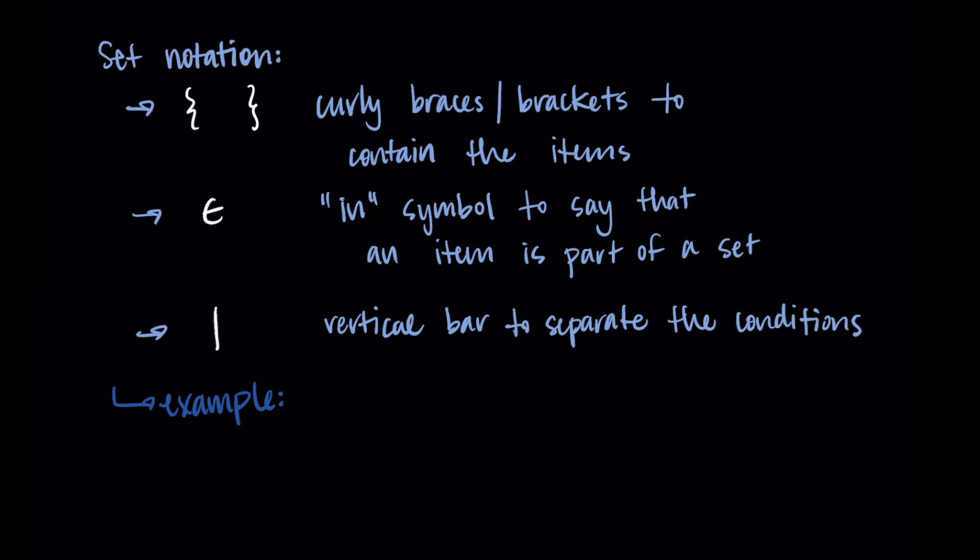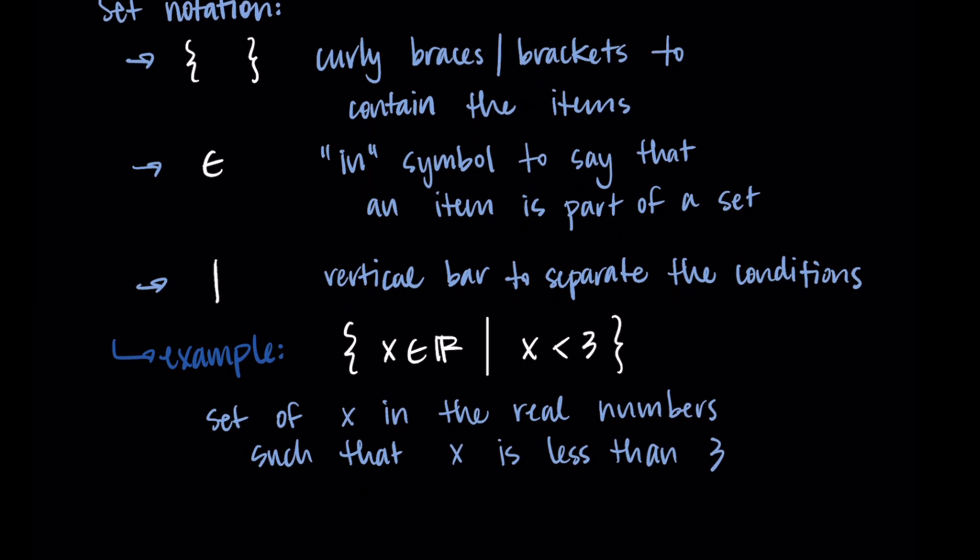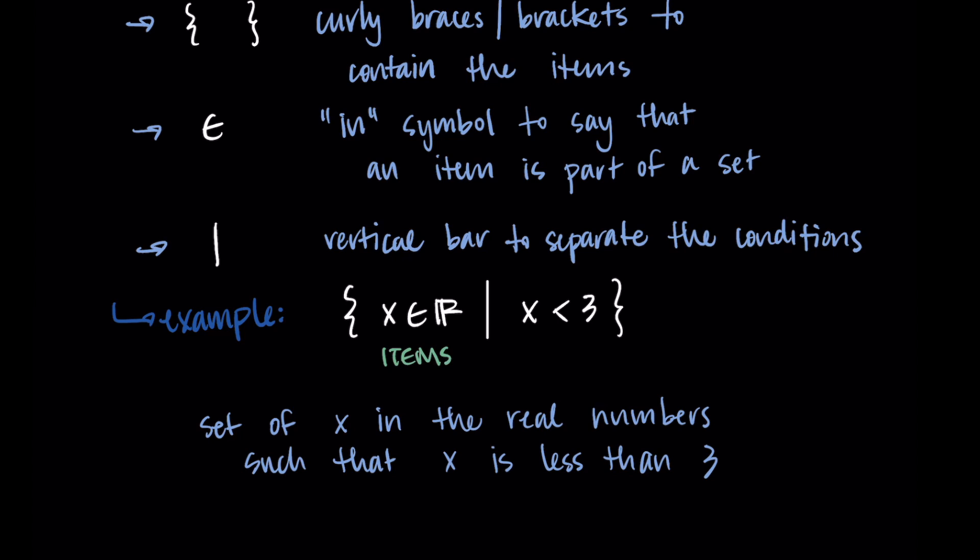Let me show you some examples of what this looks like. So let's say we have the set x in ℝ such that x is less than three. And so how I would read that is similar to what I just did. We have the set of x in the real numbers such that x is less than three. On the left hand side are the items. So that's the x in ℝ. That's the items in the set we're looking at. And then the x is less than three is the conditions that correspond to those items. So in this example, we'd be looking at any real number less than three. And this is just the mathematical way to write that.